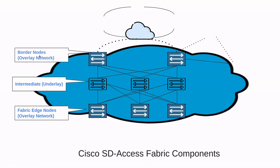After that, we have the border nodes, which are also part of the overlay network. This fabric device, which is basically a core layer device, connects external Layer 3 networks to the SD Access fabric, which is run by the data control plane or VXLAN.